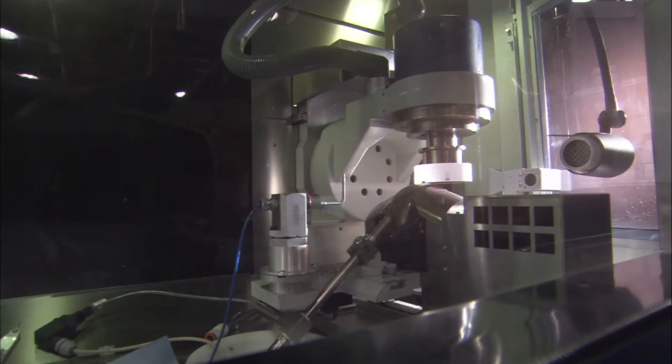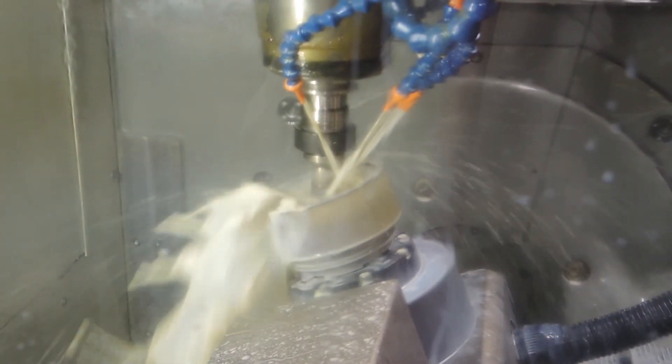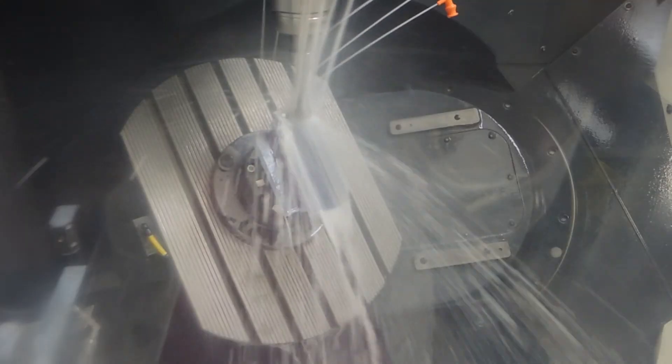It's very important for some of these parts we make to get them right the first time. We can wait up to six months to get a piece of raw material, so we have to get it right the first time. We don't have a second chance.